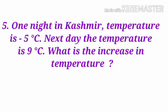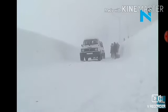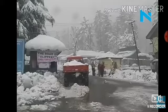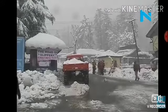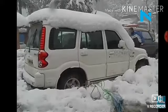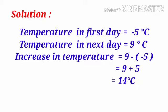One night in Kashmir the temperature is minus 5 degrees Celsius. The next day it is 9 degrees Celsius. To find the increase in temperature, we subtract: 9 minus (minus 5) equals 9 plus 5, by the integer rule, giving 14 degrees Celsius.